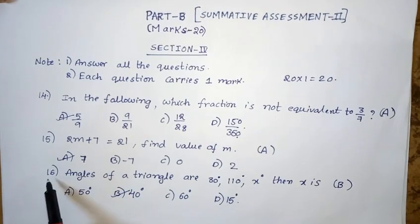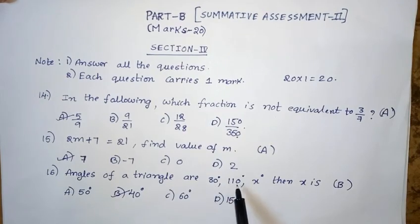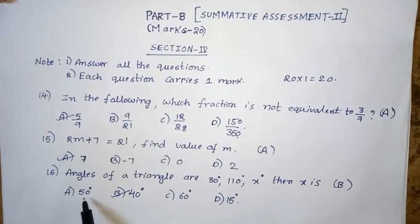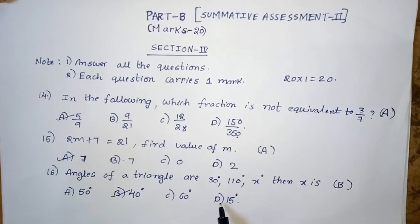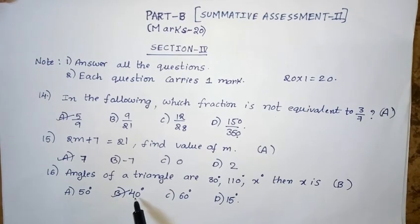Sixteenth question: Angles of a triangle are 30 degrees, 110 degrees, and X degrees. Then X is — Option A: 50 degrees. Option B: 40 degrees. Option C: 60 degrees. Option D: 15 degrees. Option B — 40 degrees — is the right answer.